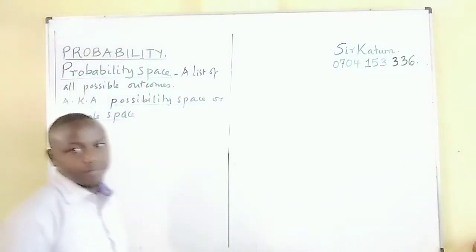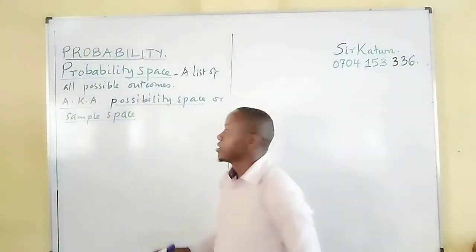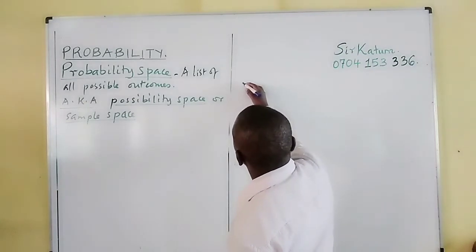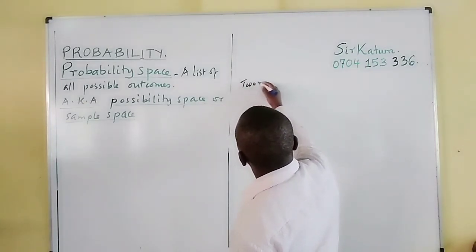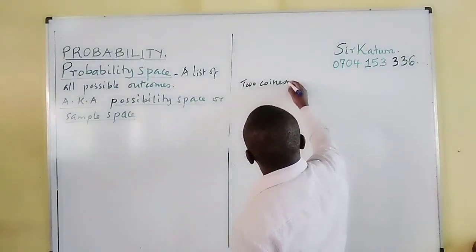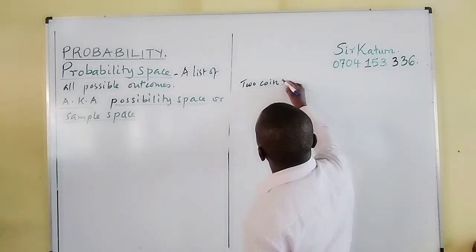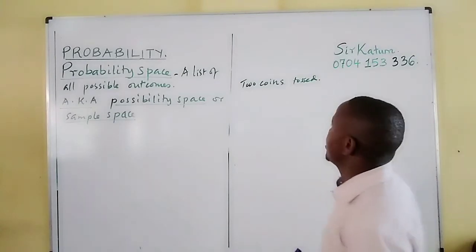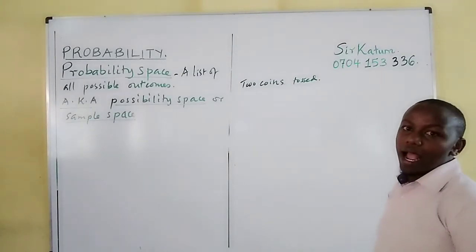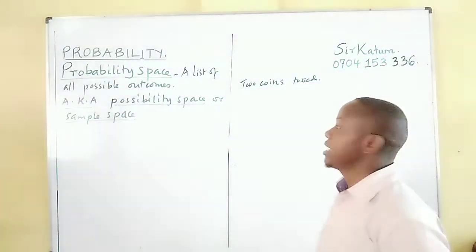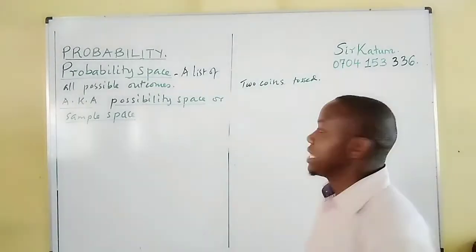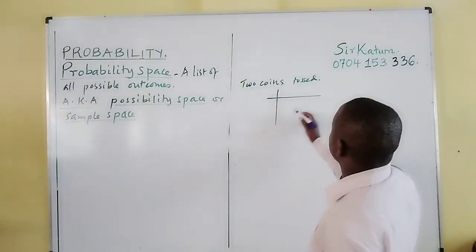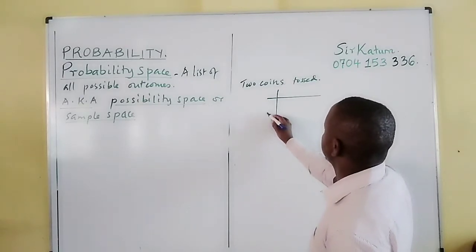Let's say, for example, two coins are tossed. When two coins are tossed, remember a coin has a head or a tail. Therefore we can say that the probability space can be outlined as shown below.